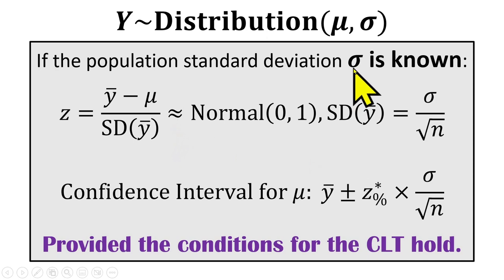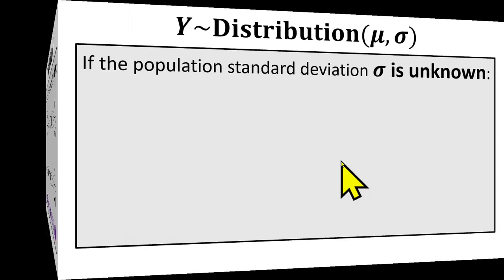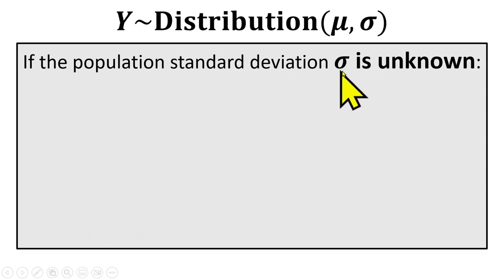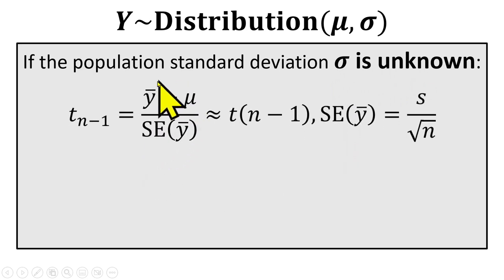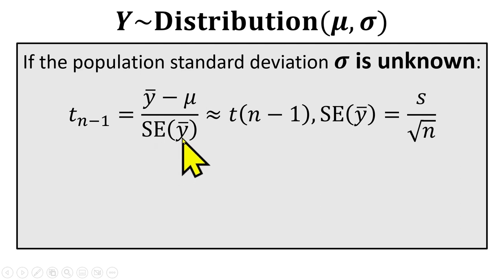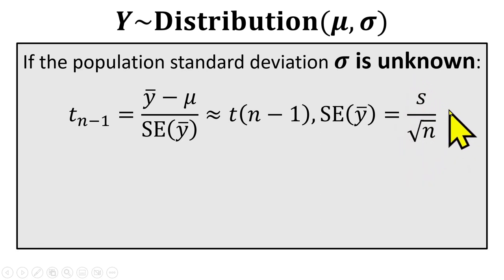That's the case when the standard deviation for the population is known. Now, what happens if sigma is unknown? Well, we're still going to standardize in the same way, but there's one big difference: we're going to be dividing by the standard error of the sample mean instead of the standard deviation. The standard error is an estimate of the standard deviation of the sample mean, where we use the sample standard deviation instead of sigma because sigma is unknown.